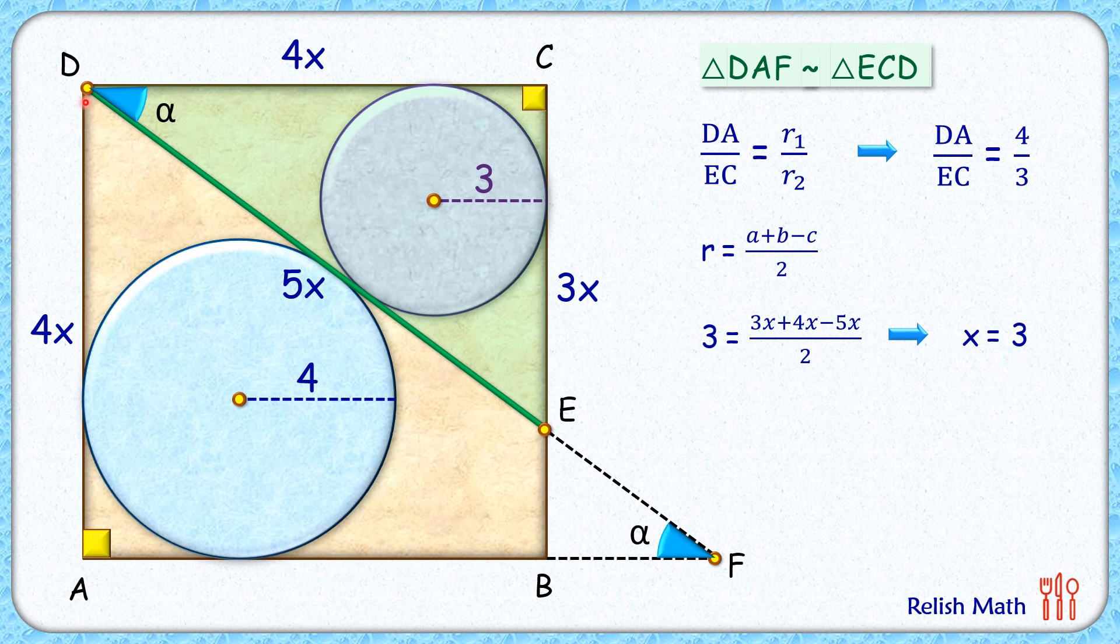If x is 3, the side length of the square will be 4 times 3 or 12 cm. As the side is 12 cm, the area of the square will be 12 squared or 144 cm squared. And that's our answer.